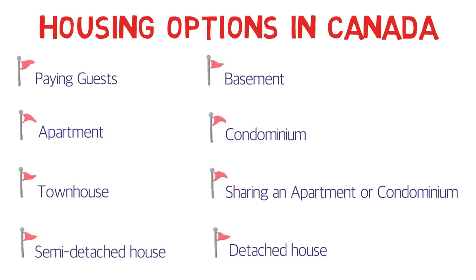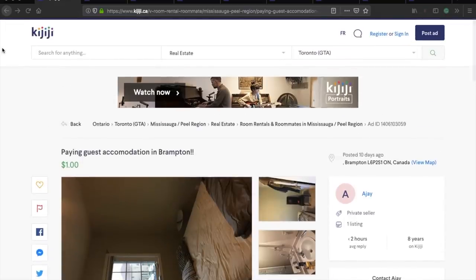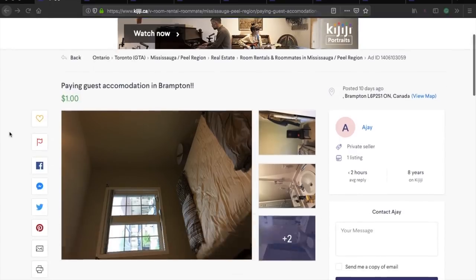I won't be giving specific rents for each option here — I'll cover that in a separate video about the cost of living in Canada, coming very soon. Now, one of the most famous websites in Canada is www.kijiji.ca, where you can find rental homes of all kinds. I found some examples of different types of houses there to show you.